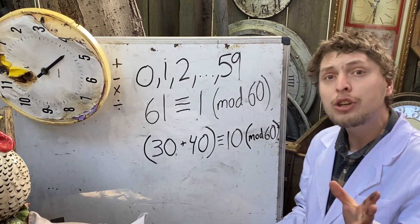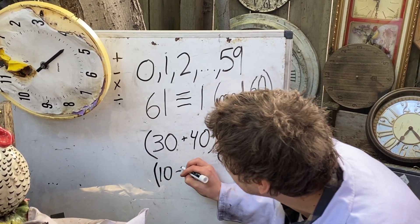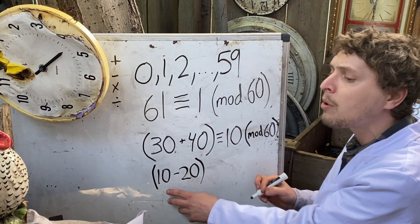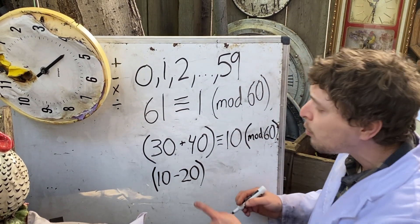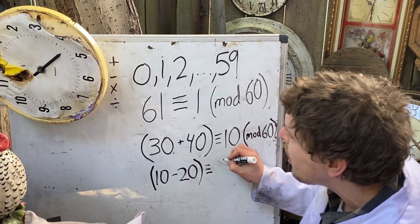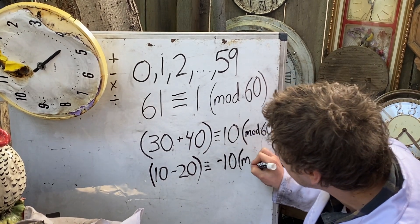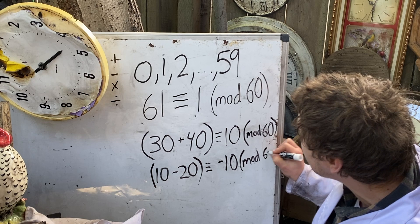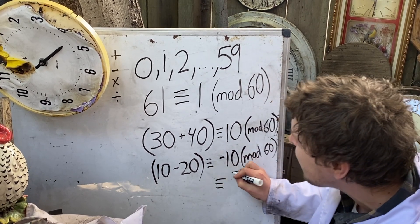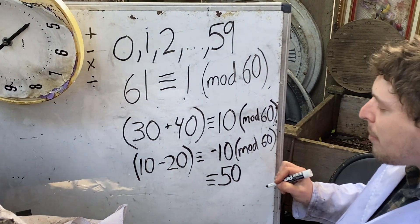We can also do that with subtraction. If I add something like 10 minus 20 in this mod, which would be like going forward 10 minutes and then backwards 20 minutes, well, that is congruent to negative 10 in this mod. But we can also reduce negative 10 to being congruent to 50, which is 10 before the mod number.